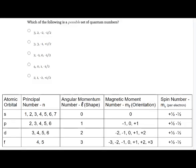Which of the following is a possible set of quantum numbers? Reading left to right, the values are N, L, M sub L, M sub S. The first set is: N = 3, L = 2 — which is valid since N of three can have L of two. M sub L of negative two is good, and M sub S of negative one-half is valid. So the first set is the correct answer.